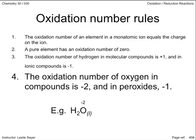Rule number four, the oxidation number of oxygen in compounds is negative two, and in peroxides, negative one. In ionic compounds, the oxide has a negative two charge. In molecular compounds, oxygen usually has the strongest electronegativity in the compound.